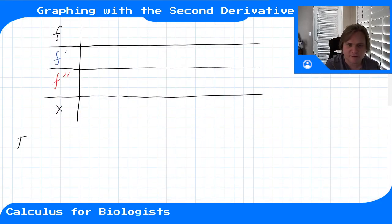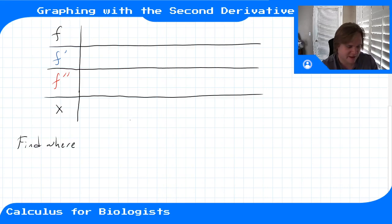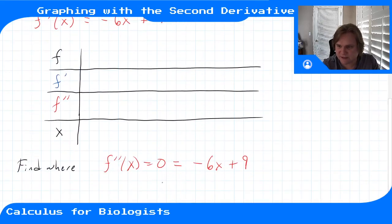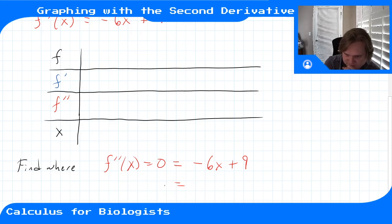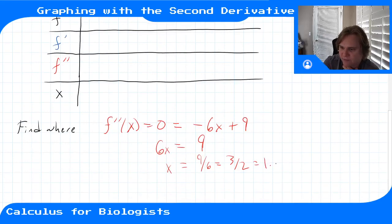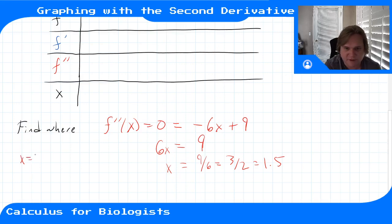Let's find where f''(x) = 0. We have -6x + 9 = 0, so 6x = 9, giving x = 9/6 = 3/2 = 1.5. So x = 1.5 is an inflection point.